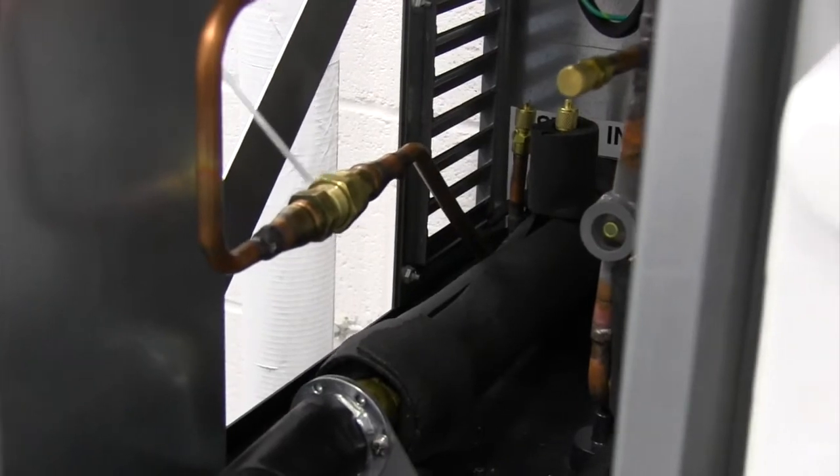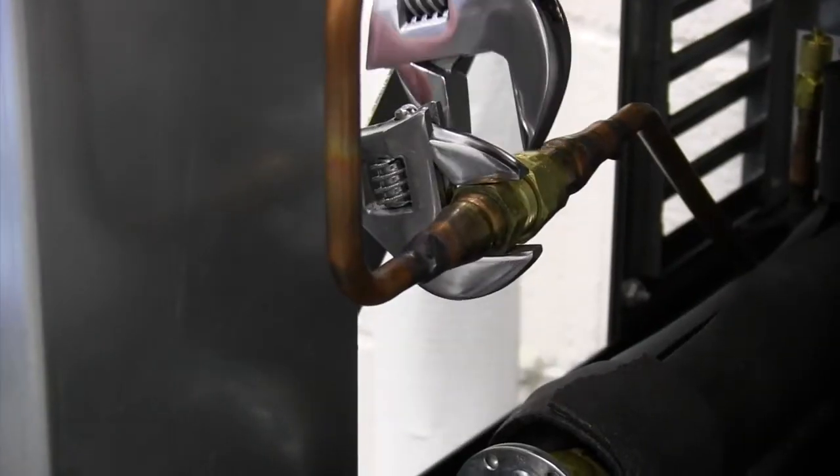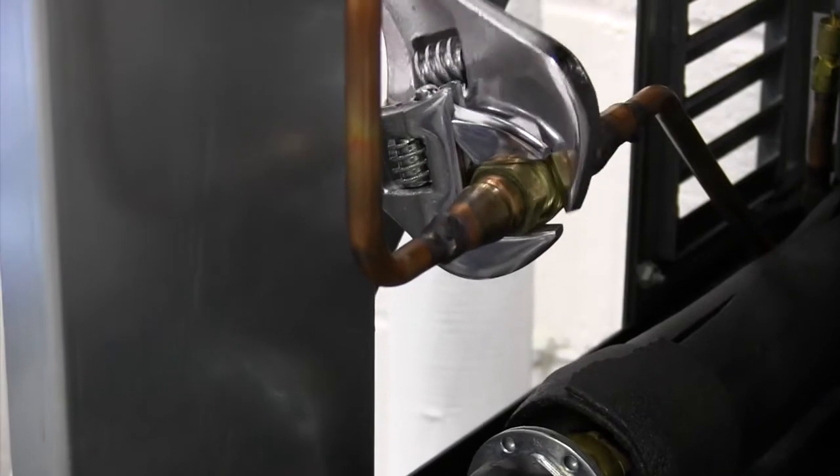We're going to add a little bit of oil onto the threads of the quick disconnect. For the liquid line, you're going to have to use a backing wrench. We're going to tighten this up.